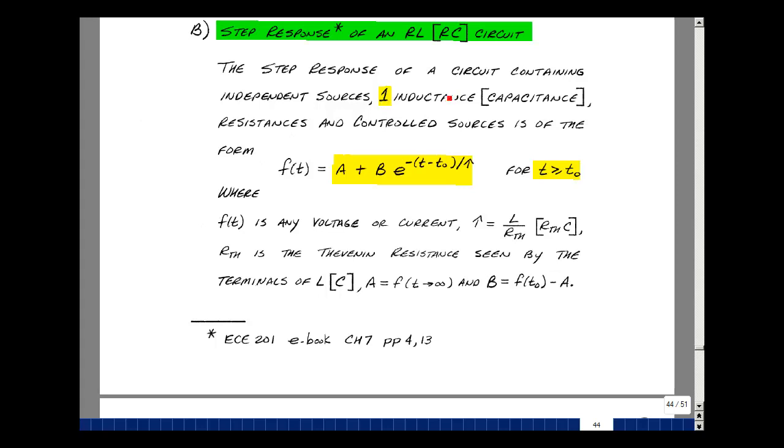In order for us to calculate the time domain response, let's go back to ECE 201 in Chapter 7, around pages 4 and 13, where I developed the following algorithm. The step response of a circuit containing independent sources, but only one inductance, resistances, and controlled sources, is of the form a plus b times e to the minus quantity t minus t0 divided by tau, where t is greater than or equal to t0.